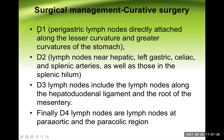D1 are the perigastric lymph nodes directly along the lesser and greater curvature. D2 are the lymph nodes near the hepatic, left gastric, celiac, and splenic arteries and splenic hilum. D3 includes the lymph nodes along the hepatoduodenal ligament and at the root of the mesentery. D4 are the paraaortic and paracolic lymph nodes.